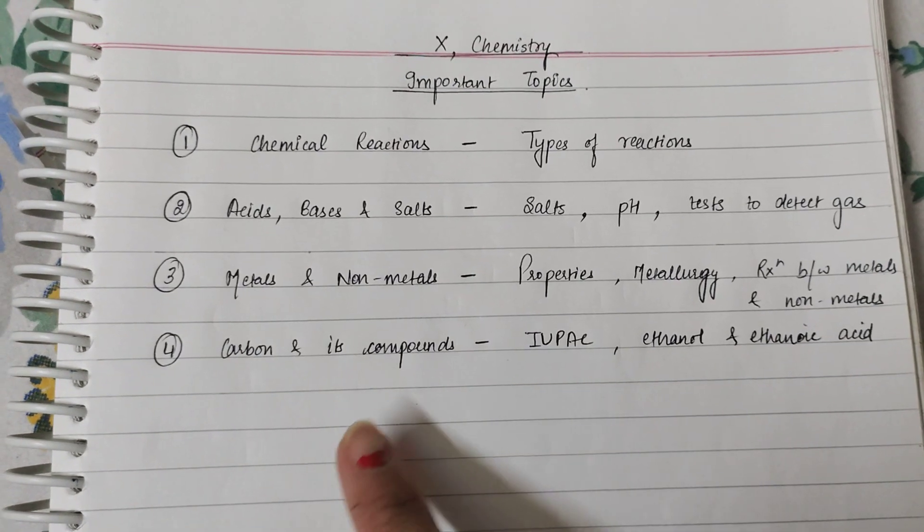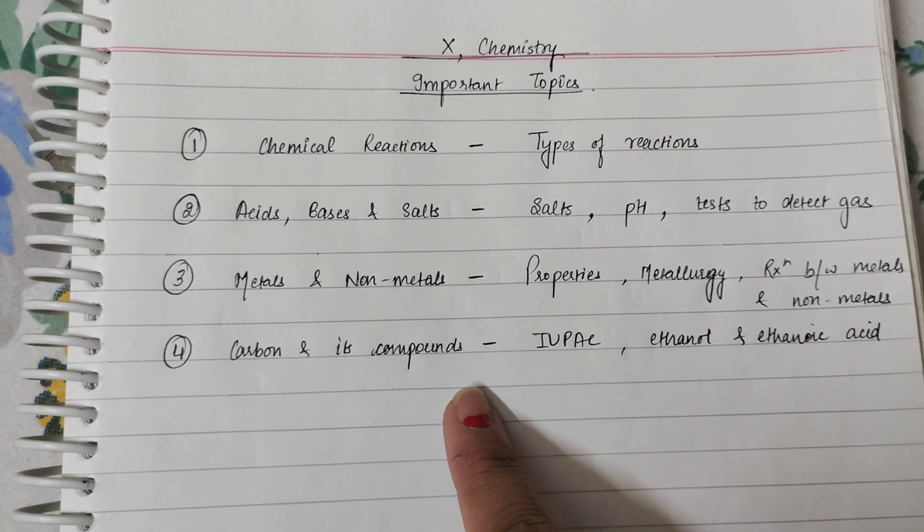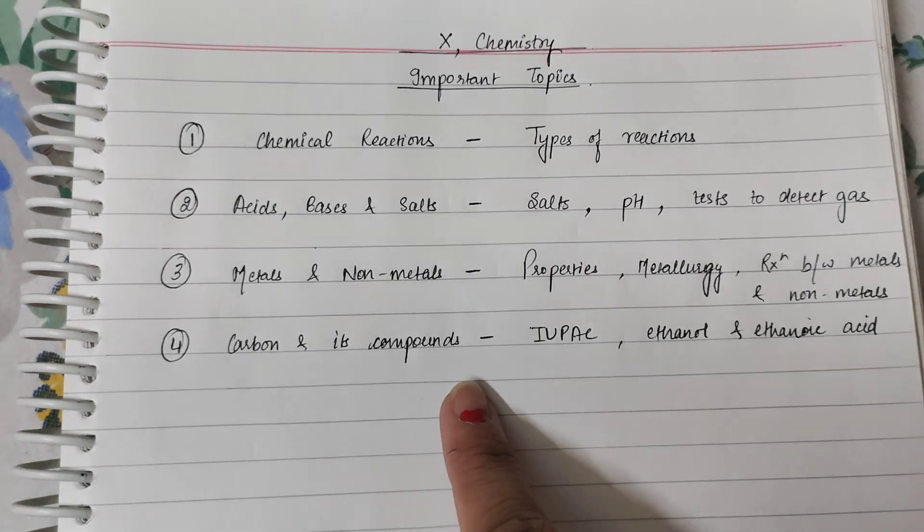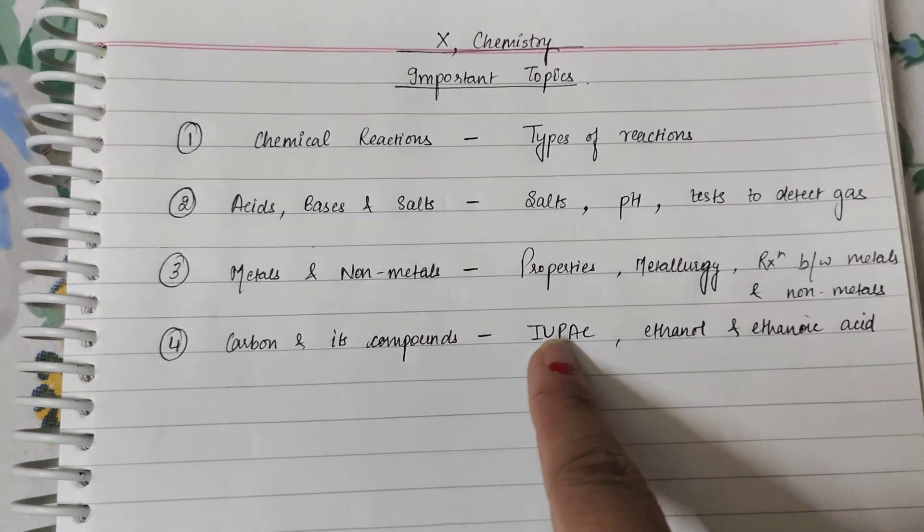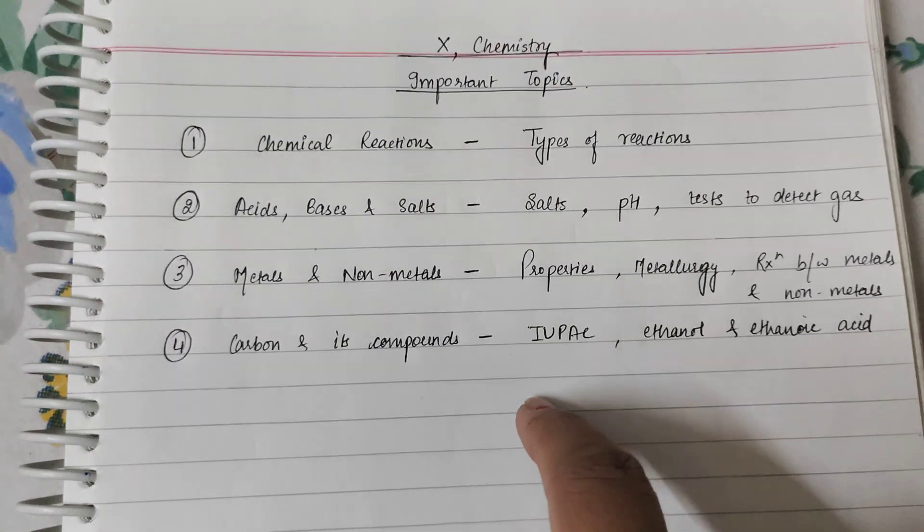The last lesson is carbon and its compounds. It's a very big lesson. In this, you don't have any difficulty until allotropes. After that, what you have to do with IUPAC naming is a little bit difficult. You will have to pay a lot of attention.